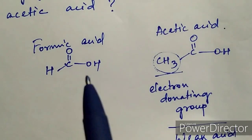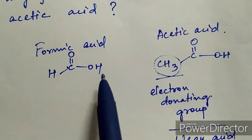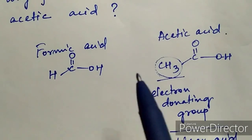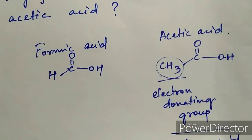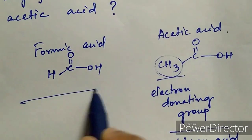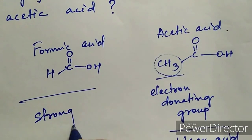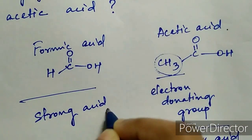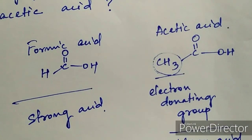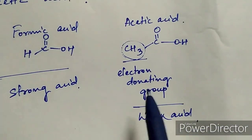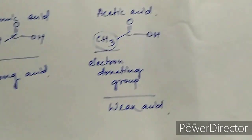In formic acid, no CH3 group is present — no electron-donating group is present. So we can remove this H easily, and more H+ is present in the solution, which means formic acid is a strong acid.